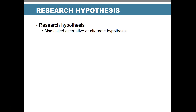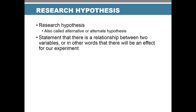The research hypothesis — also called the alternative or alternate hypothesis — states that there is a relationship between the two variables; in other words, there will be an effect. It's the flip side of the null hypothesis. We write this as H-sub-a or H-sub-one. Whichever notation you use is up to you, but you may see it written both ways.